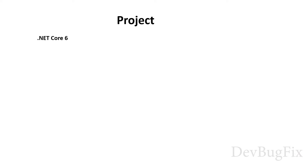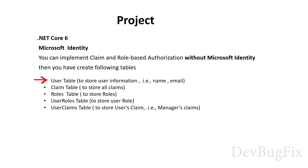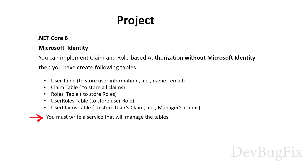In this project, we will use .NET Core 6 and Microsoft Identity. Microsoft Identity provides many features to manage users. You can implement claim and role based authorization without Microsoft Identity, but then you have to create the following tables and services: a user table to store user information such as name and email, a claim table to store all claims, a role table to store all roles, a user role table to store user roles with a one-to-many relationship, and a user claim table to store user claims with a one-to-many relationship. One user can have many claims and you must write a service that manages these tables. You can use Microsoft Identity and it will do all of the above for you.